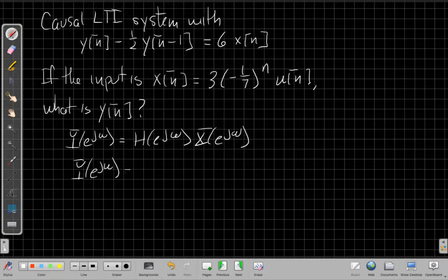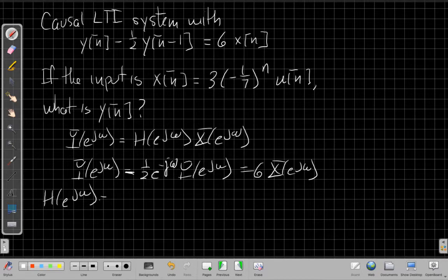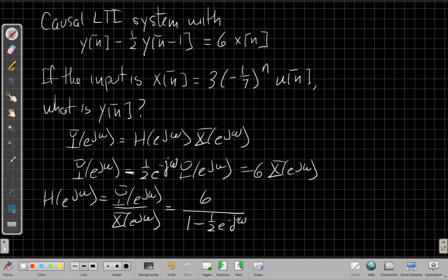I can say Y(e^jω) - (1/2)e^(-jω) Y(e^jω) = 6X(e^jω). To find H for this equation, I divide through so that H(e^jω) = Y(e^jω) / X(e^jω). Since this technique was in a previous video, I'll jump to the punch line: you should have H(e^jω) = 6 / (1 - (1/2)e^(-jω)).